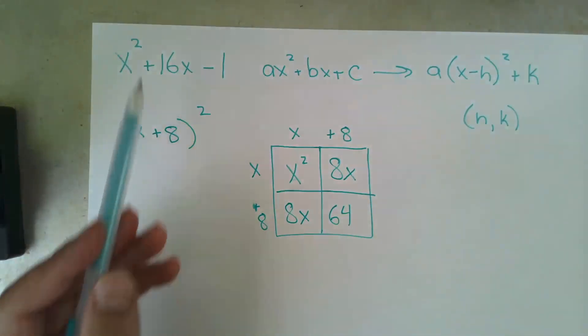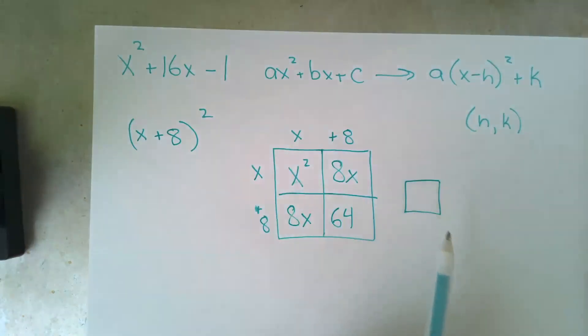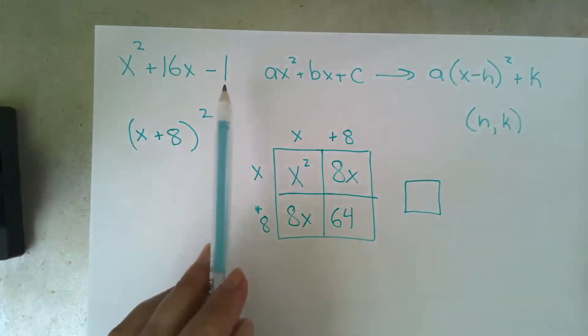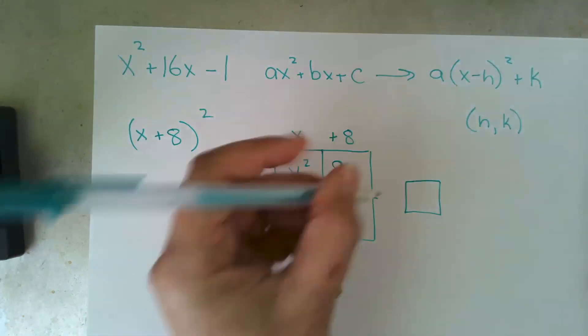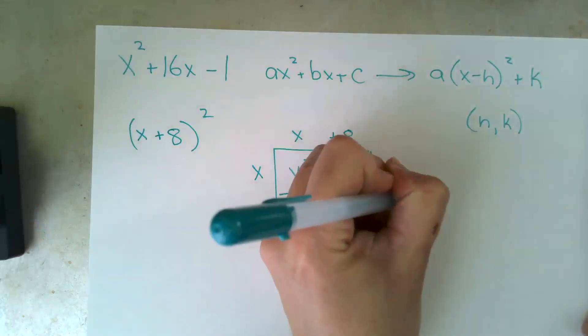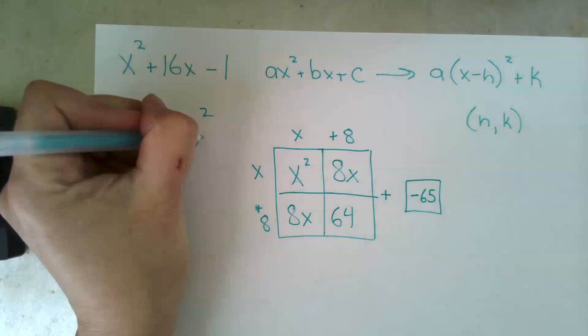And so we have changed our equation. So we need to add or subtract something to it to make sure we don't change it. So what do we add to 64 to turn it back into negative 1? We add negative 65. And so that goes here.